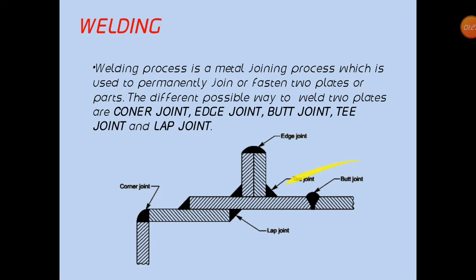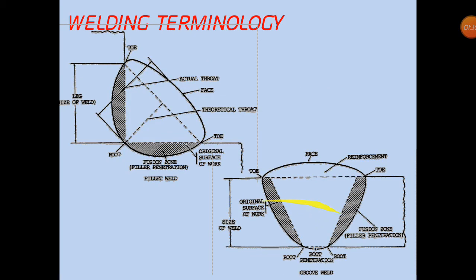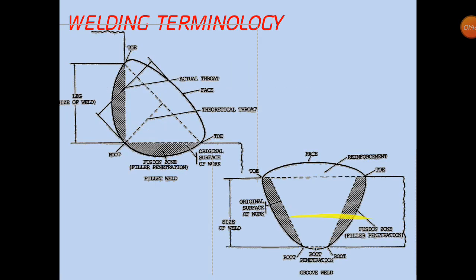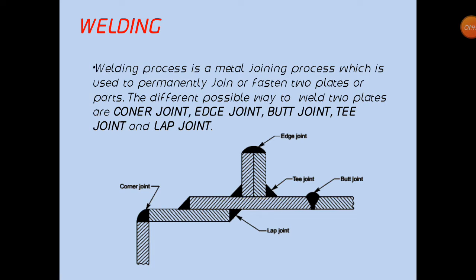Two other types of joint are butt joint and lap joint. In butt joint, two plates are placed parallel, one beside the second. That is the difference between butt joint and lap joint.